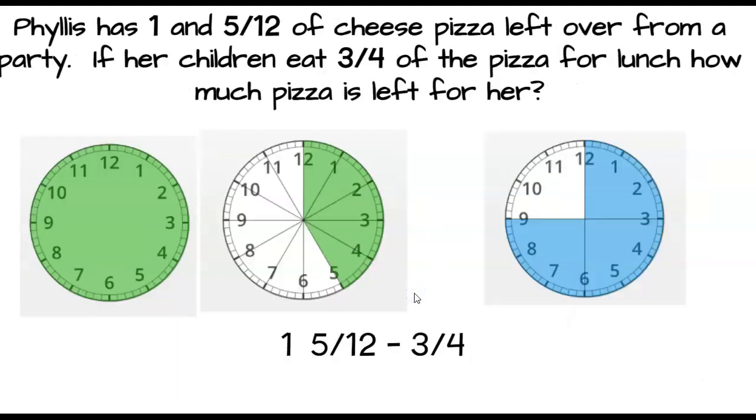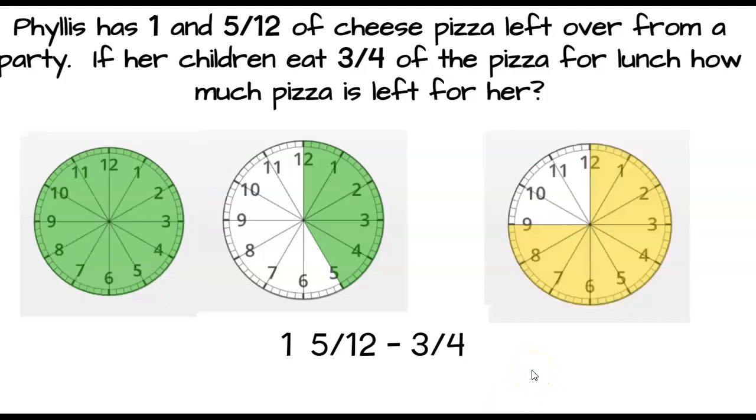Let's try a subtraction problem. Phyllis has 1 and 5/12 of cheese pizza left over from a party. Her children eat 3/4 of the pizza for lunch. How much pizza is left for her? Well, we have 1 and 5/12 on one side and we have 3/4 on the other side. What do you notice? That's right. The language is not the same. We have 12ths and we have 4ths. So what do we need to do? Bam. We make them all 12ths. Looks pretty good.